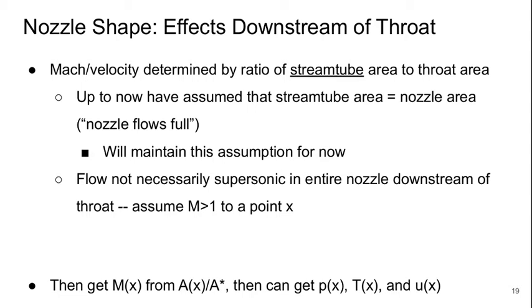Now, downstream of the throat in a supersonic nozzle is where things get interesting, and we have to think about what's happening with the shape of the nozzle. The Mach number, or velocity, is really determined downstream of the throat by the ratio of the stream tube area to the throat area. Up to now, we've just assumed that these two things are the same, or that the nozzle is flowing full. And we're going to maintain this assumption for now.